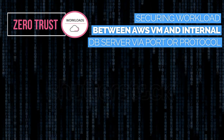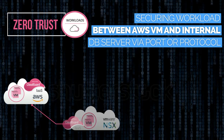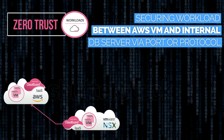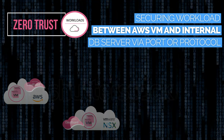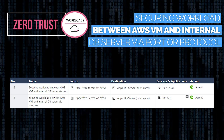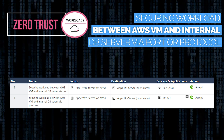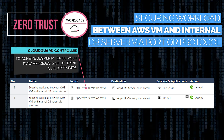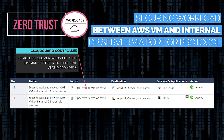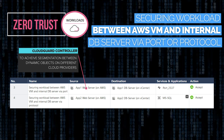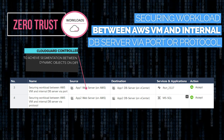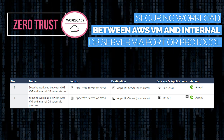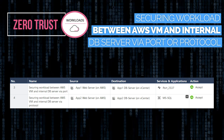Zero trust workloads is about securing workloads in private, public, and hybrid clouds. Here, we use Checkpoint CloudGuard to create granular segmentation between cloud objects in a multi-cloud environment. This security rule limits the access of a virtual machine in AWS to an internal database server in VMware NSX only through a specific port or a specific protocol.